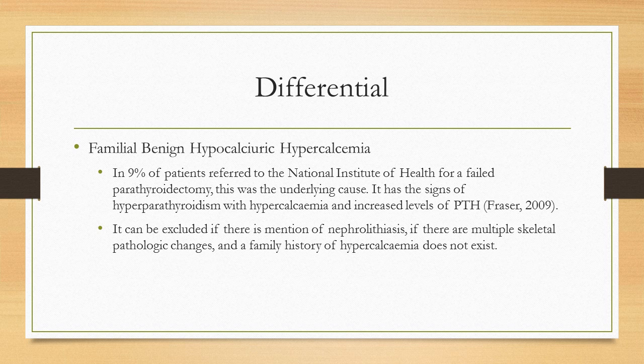The second differential diagnosis is familial benign hypercalcemia. In 9 percent of patients referred to the National Institute of Health for failed parathyroidectomies, this is the underlying cause. It has the signs of hyperparathyroidism with hypercalcemia and increased levels of parathyroid hormone. However, it can be excluded if there is mention of nephrolithiasis or kidney stones, if there are multiple skeletal pathologic changes, or if a family history of hypercalcemia does not exist.